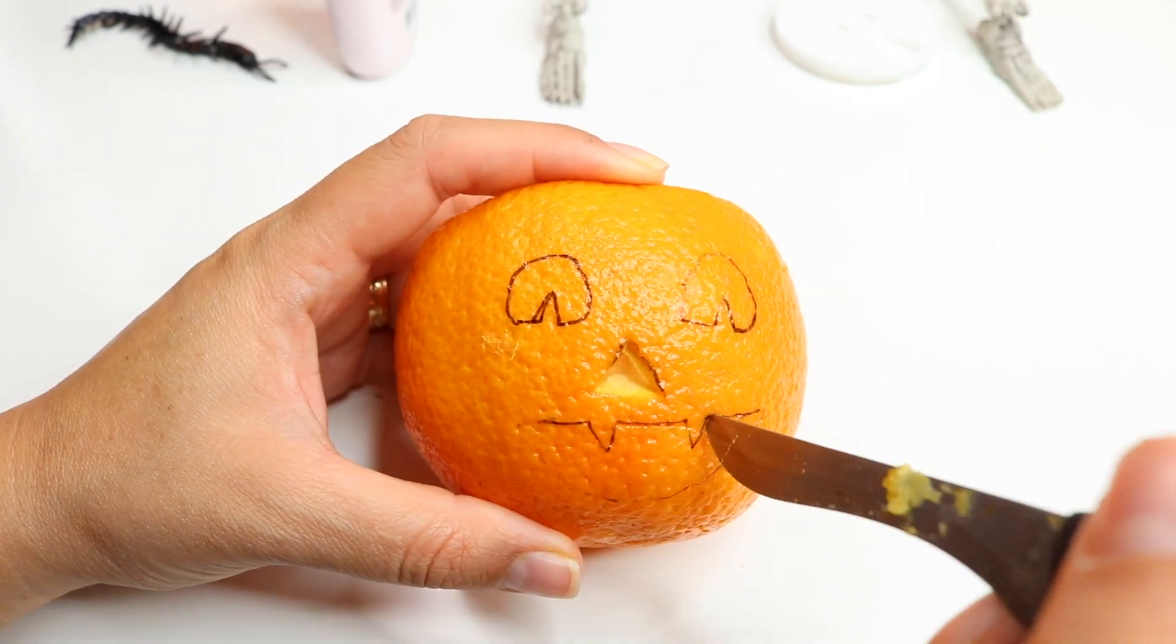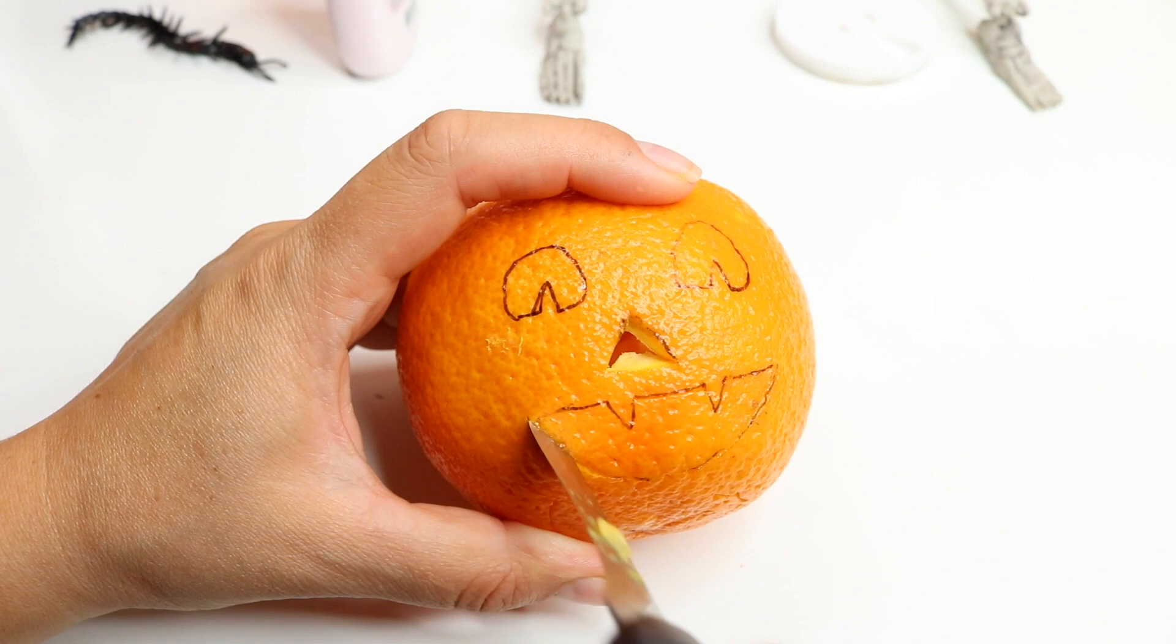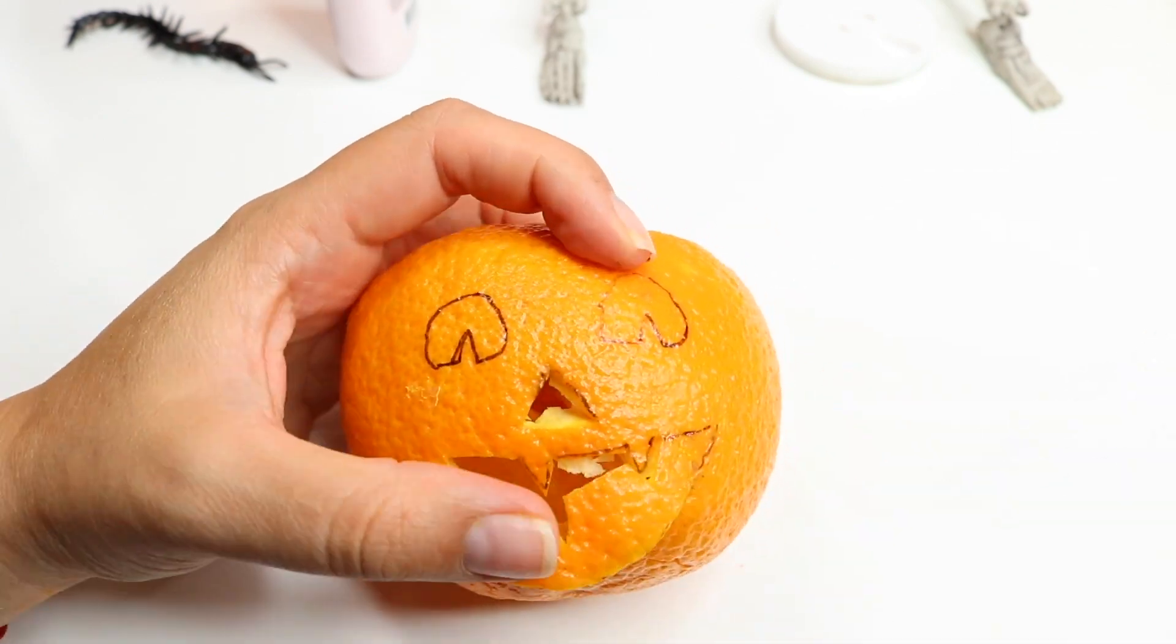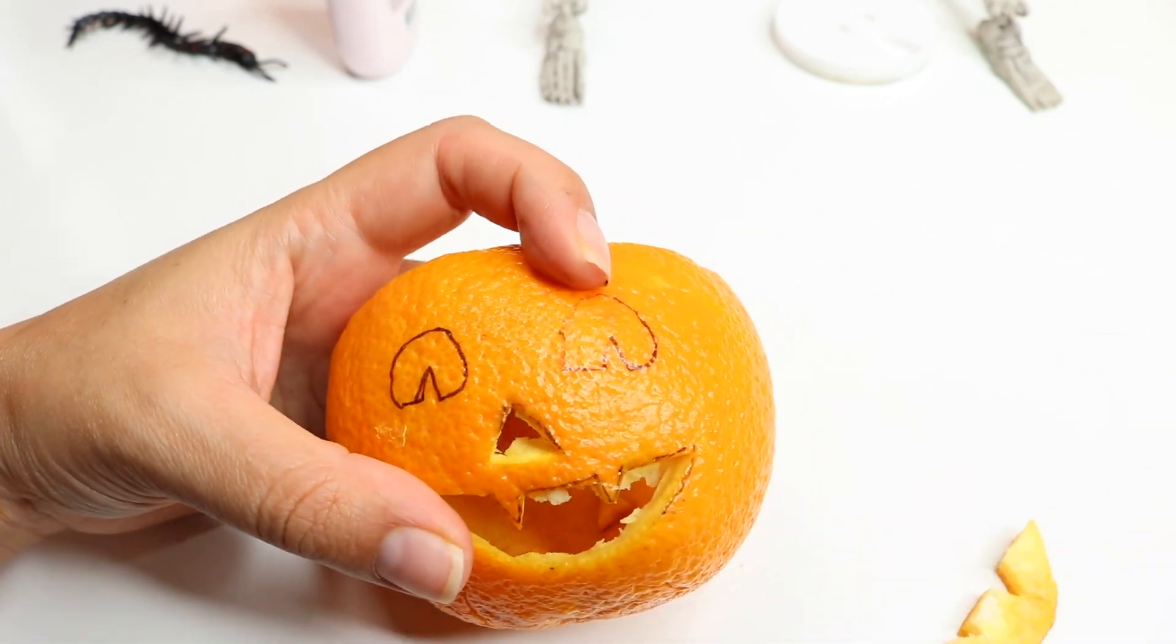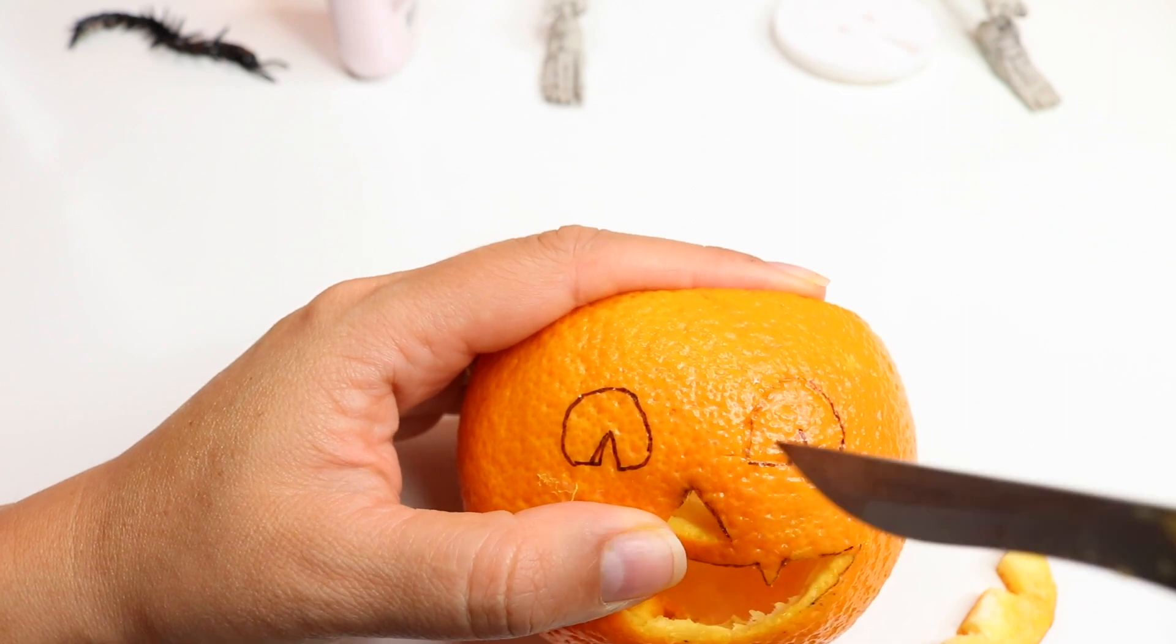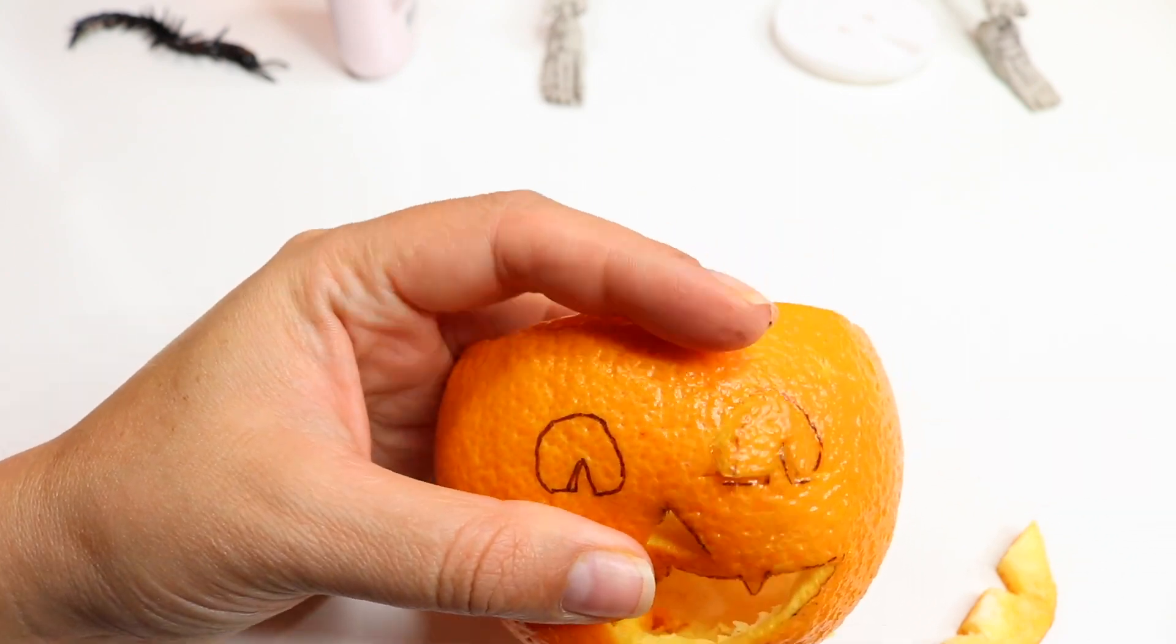That would be bloody for Halloween. Once you take everything out, make sure you dry it with a napkin. Add your candies - I added some M&Ms - and this is how it turned out.